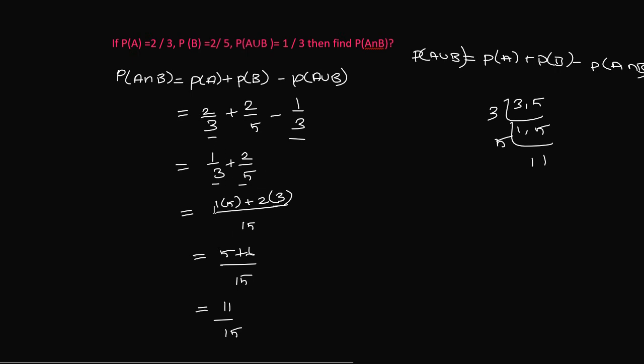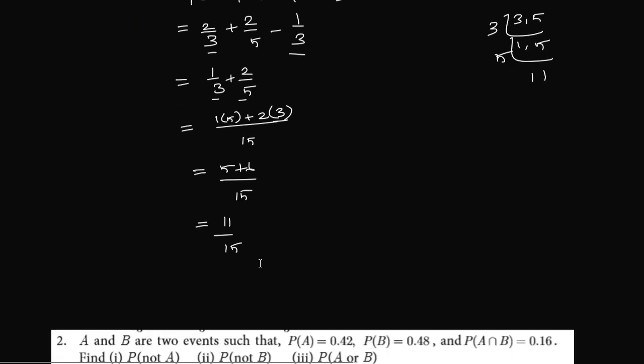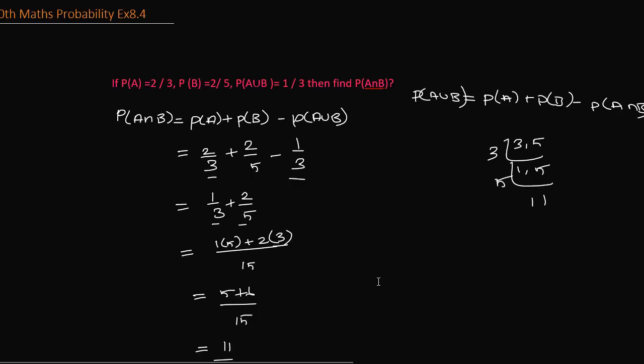So here, simplify: 1 times 5 is 5 plus 2 times 3 is 6, so 5 plus 6 by 15, that is 11 by 15. So this is question number 1.